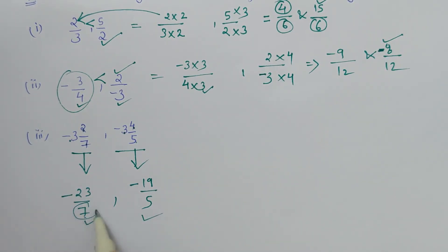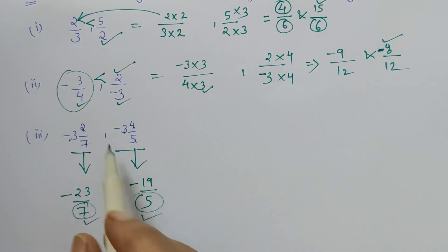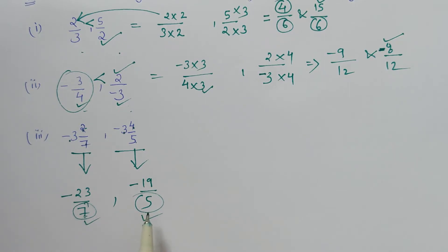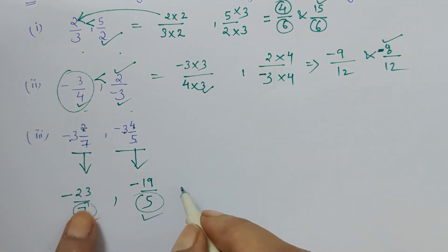Again here we have 7 and 5 in denominator. We have to find the LCM. As they do not have any common factors like in the previous cases, there is no common factor between them. They are co-prime to each other, so directly we multiply to get the LCM. So 7 times 5 is 35, which is the LCM for this case.